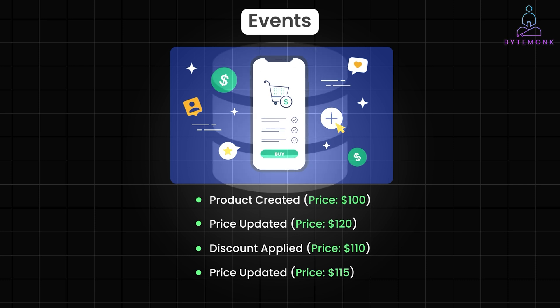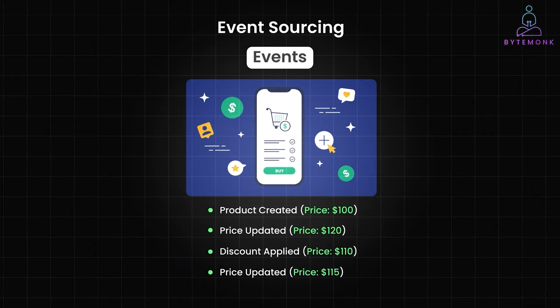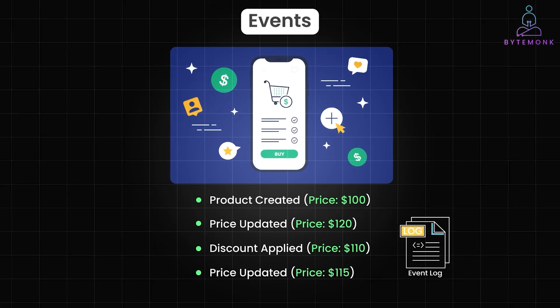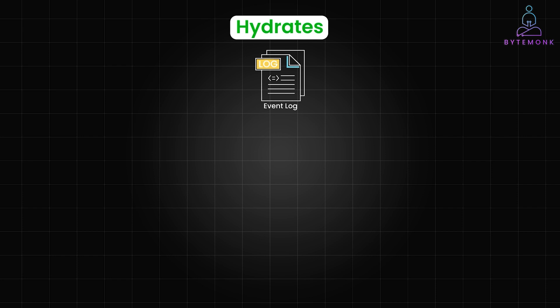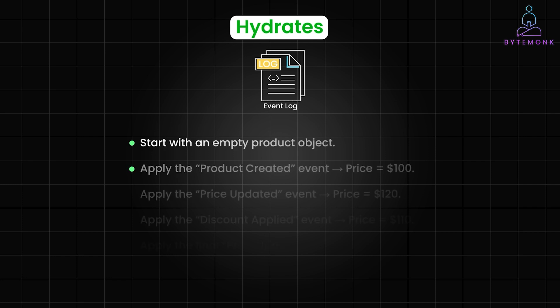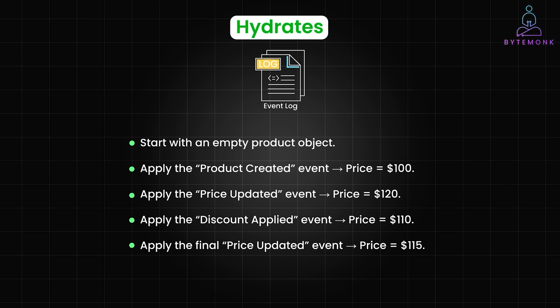In a traditional system, you'd simply query the database to get the current price, which would be stored as $115 only. However, in event sourcing, the current price isn't directly stored — instead you only have a log of events. To determine the current price, you must replay all the events from the beginning. So when your application needs to know the current price of this product, it hydrates the product by replaying these events sequentially. You start with an empty product object and keep applying all the events. After hydration, the product object reflects the current state with the price of $115.